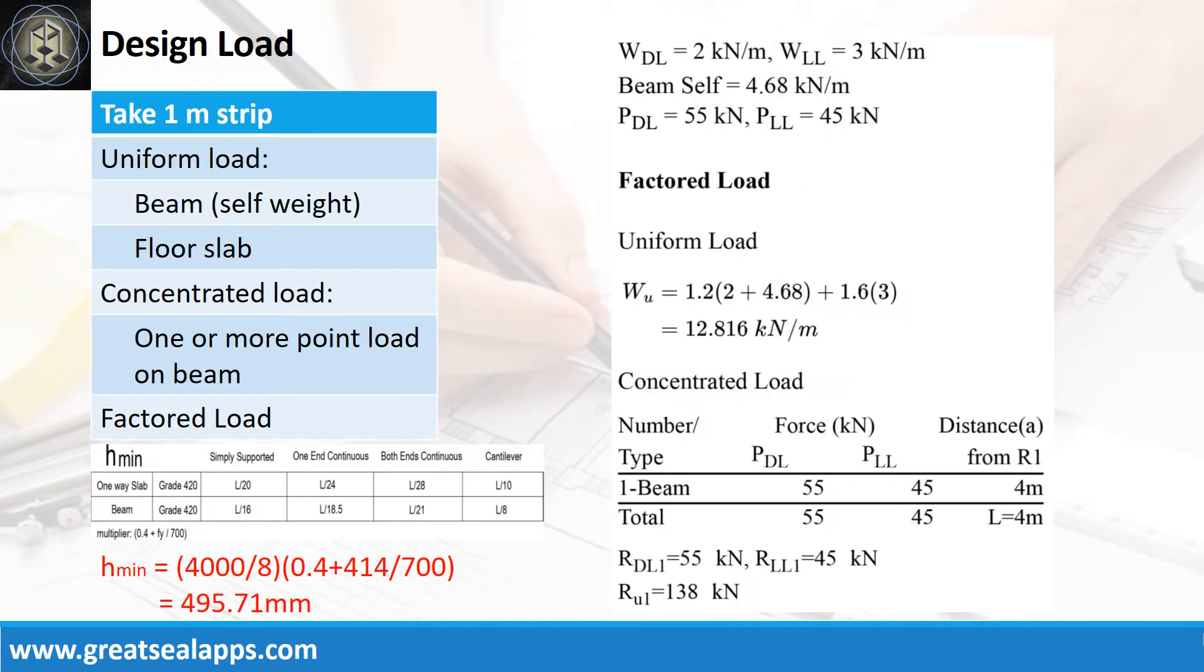The beam carries a uniform dead load of 2 kN per meter and uniform live load of 3 kN per meter. The beam self-weight is 4.68 kN per meter for a factored uniform load of 12.816 kN per meter. The beam also carries a concentrated dead load of 55 kN and concentrated live load of 45 kN for a factored concentrated load of 138 kN.